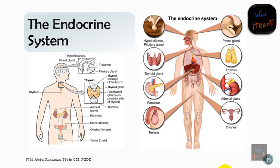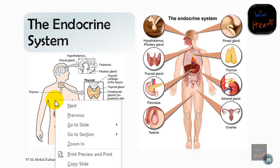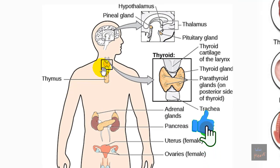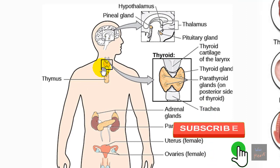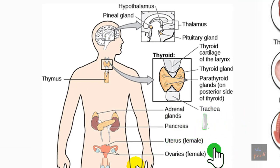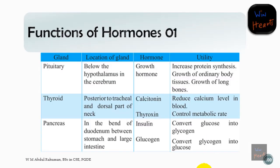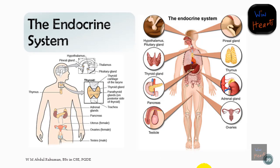The endocrine system includes several important glands. Looking at a diagram, we can see the pineal gland, thalamus and hypothalamus, pituitary gland, thyroid gland, parathyroid glands, adrenal glands — which rest on top of the kidneys — pancreas, uterus, ovaries, and thymus. These are the main organs of the endocrine system.